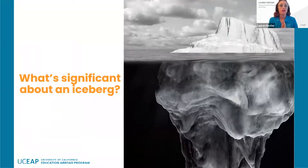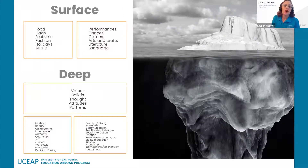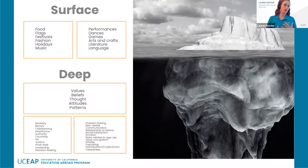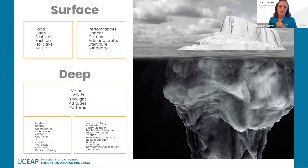So what's significant about an iceberg? When we see an iceberg, the visible part is really just a small part at the top, and the majority of the iceberg is actually under the surface — not visible to the eye. Similarly, people often think of culture as the observable characteristics such as food, flags, dress, fashion, and greeting rituals. But the reality is that these are just an external manifestation of deeply rooted values, beliefs, thoughts, and attitudes.